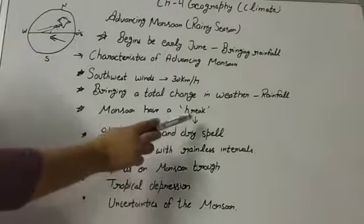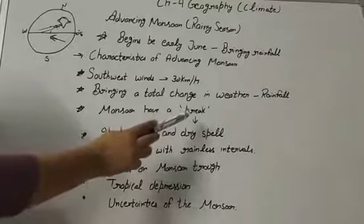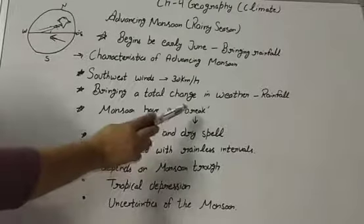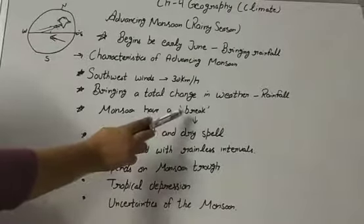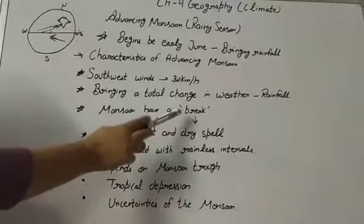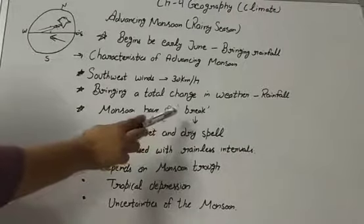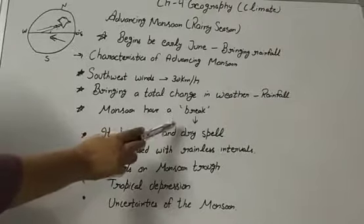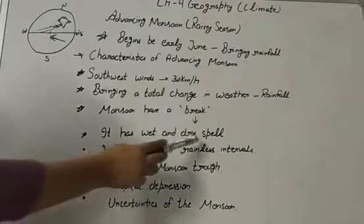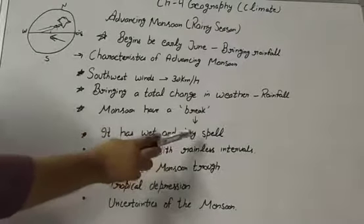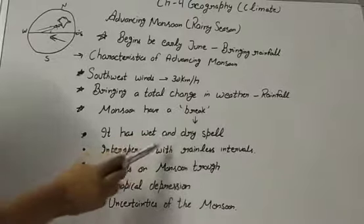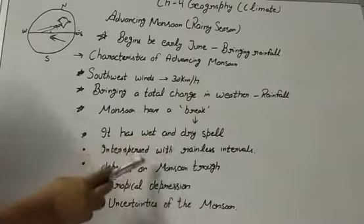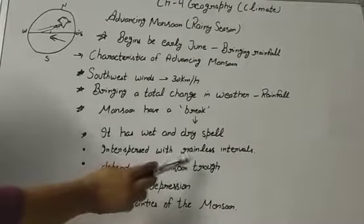Rainfall in the Ganga Valley decreases from east to west. Another phenomenon associated with the monsoon is its tendency to have a break — a period when the monsoon trough shifts close to the foothills of the Himalayas, leading to a sharp decrease in rainfall over most parts of the country. These breaks have wet and dry spells interspersed with rainless intervals.